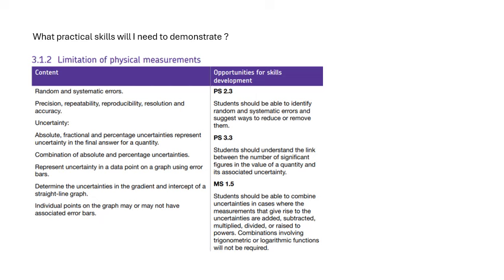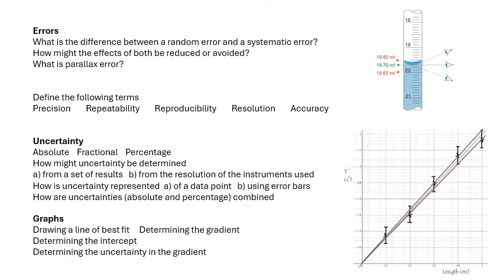This is what the specification says. I'm not going to talk through it, pause the video and have a read of that for yourself. This is a summary if you like of that. Errors: can you answer these questions? What's the difference between a random error and a systematic error? How do you go about reducing random errors and systematic errors? What is parallax error? Make sure you know what that is.